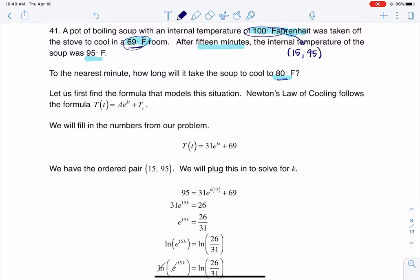This is going to follow Newton's law of cooling, so here's my exponential model. T sub s is the surrounding temperature, so in this case that's going to be 69. And a is the difference between the temperature of the soup and its surrounding temperature.